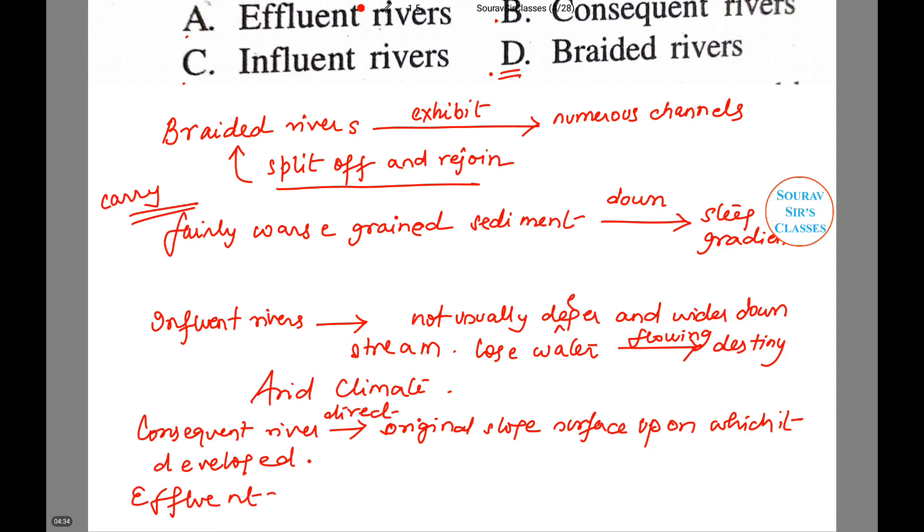And last, we move on to effluent rivers. Effluent rivers are those rivers that get their water from the groundwater. So here we get a direct relationship between the water in the effluent rivers and the groundwater or the water table.